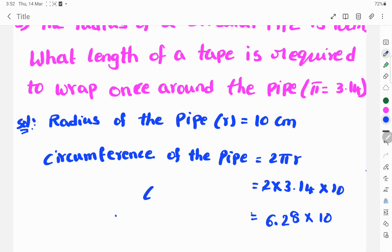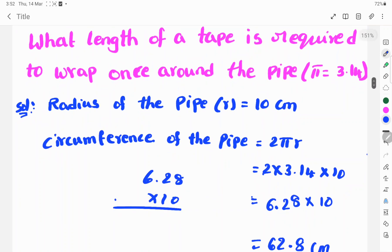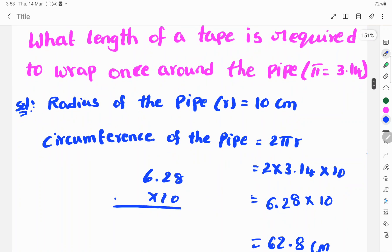Here you multiply 6.28 into 10. First you remove the digit, so 628 into 10.